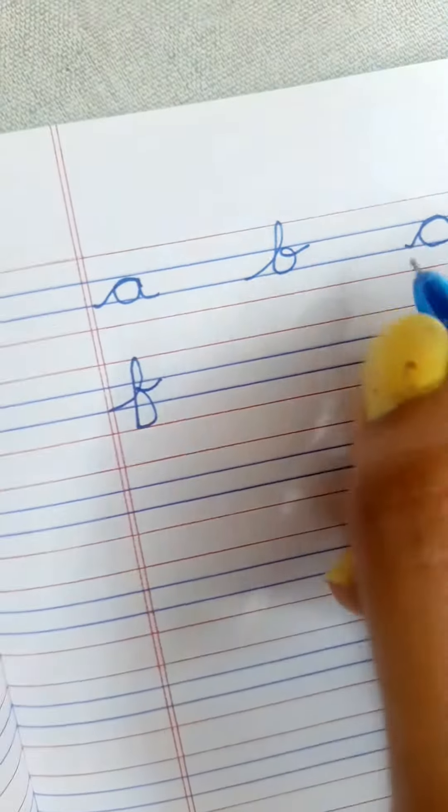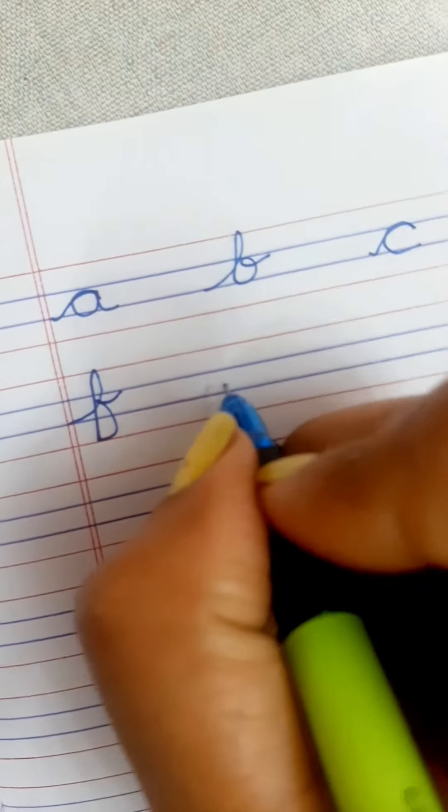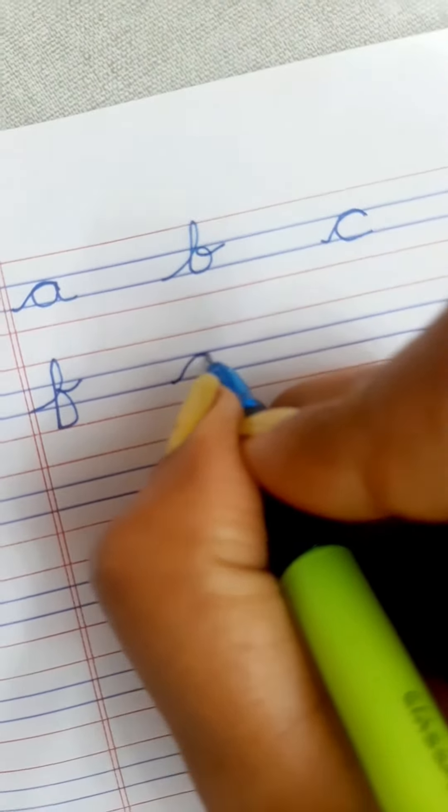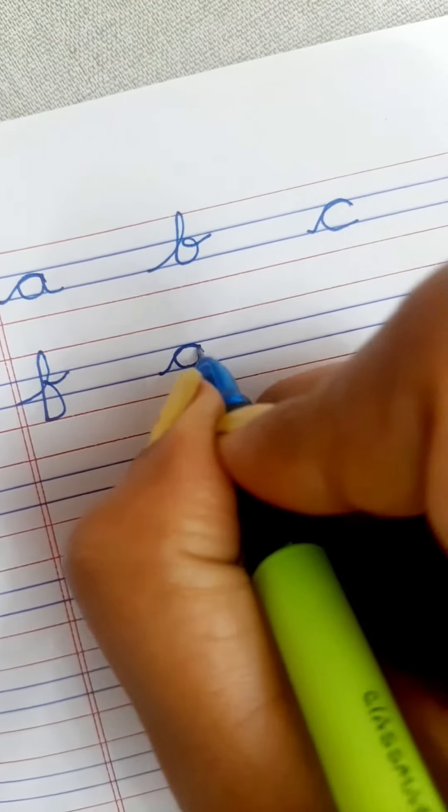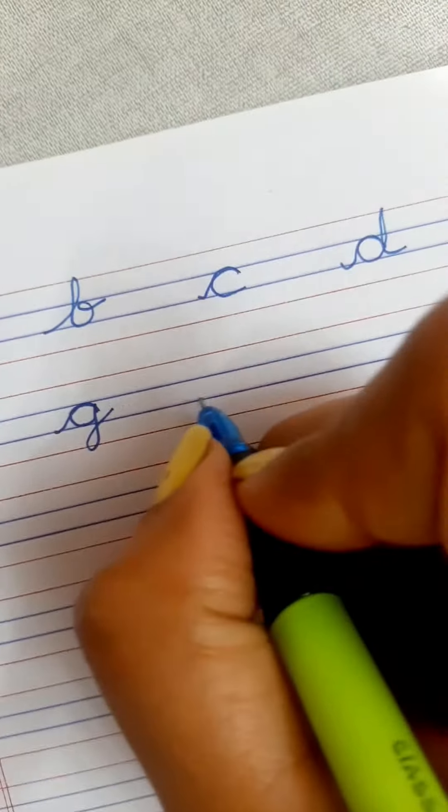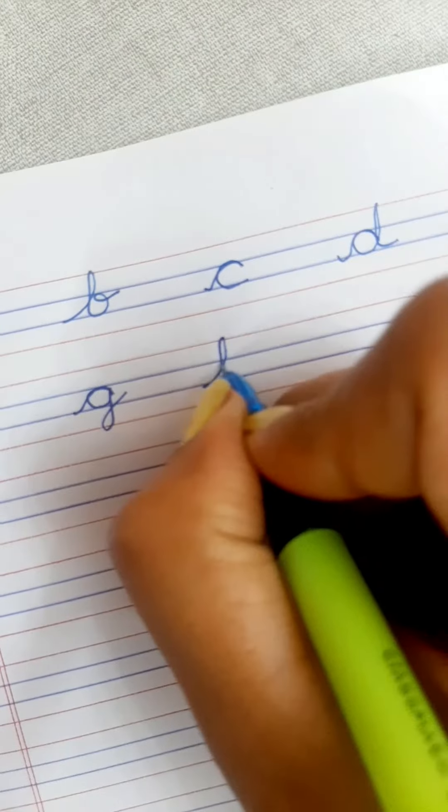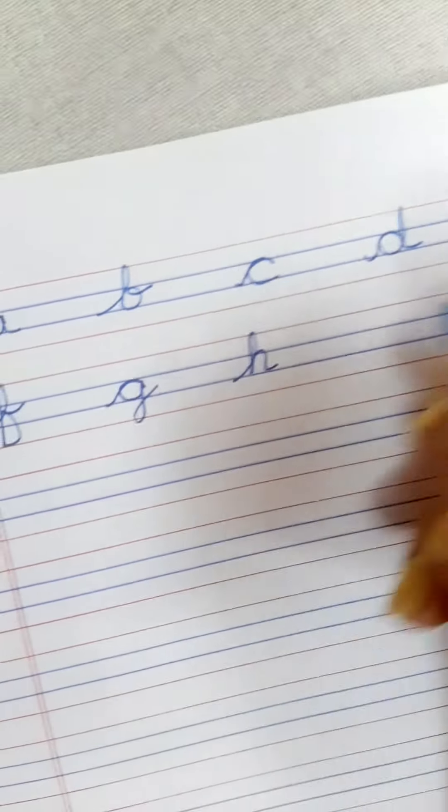So don't worry about that. You have to just start the way I am doing it. You have to follow the same. What you have to do is start with all the letters with the slanting line.